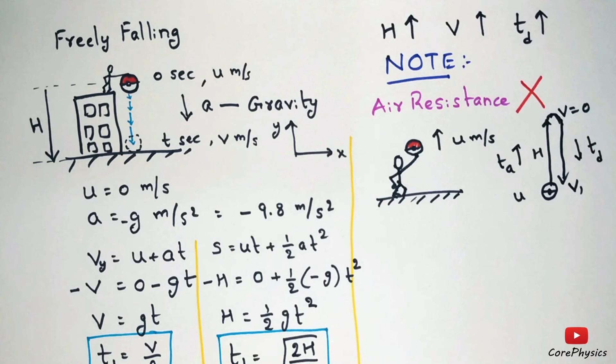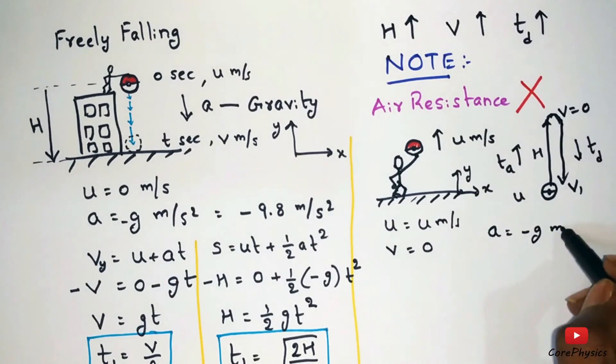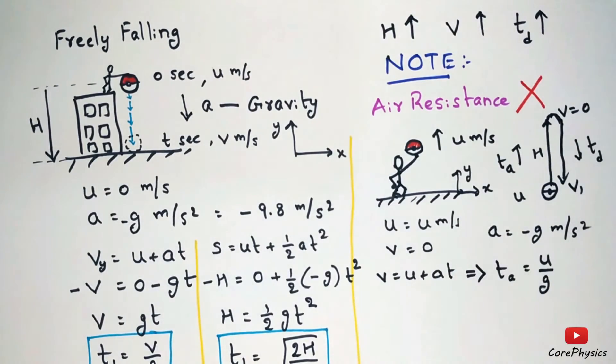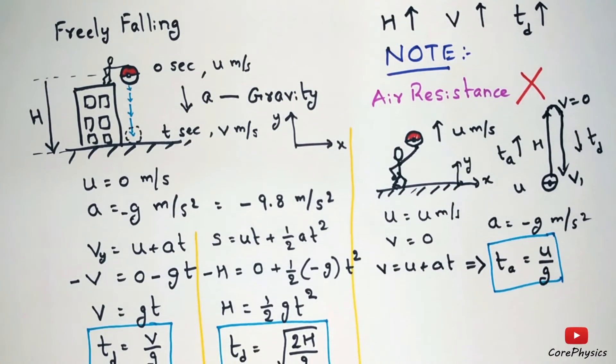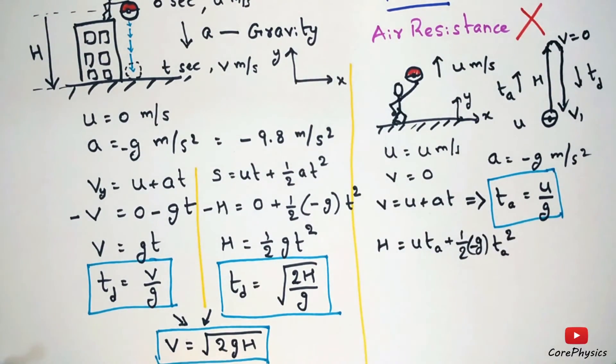So writing the equations of motion during the time of ascent, that is with initial velocity u and final velocity 0, we can get time of ascent is equal to u by g and the maximum height reached by the ball can be given by this equation. Or we can use another equation v square minus u square equal to 2as and we can find h as u square by 2g. Both of these equations will give the same value of h.